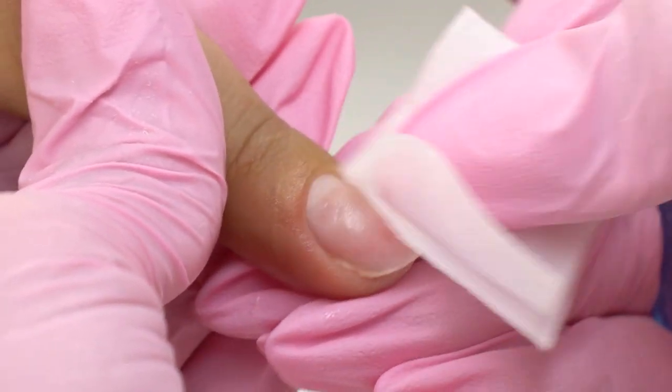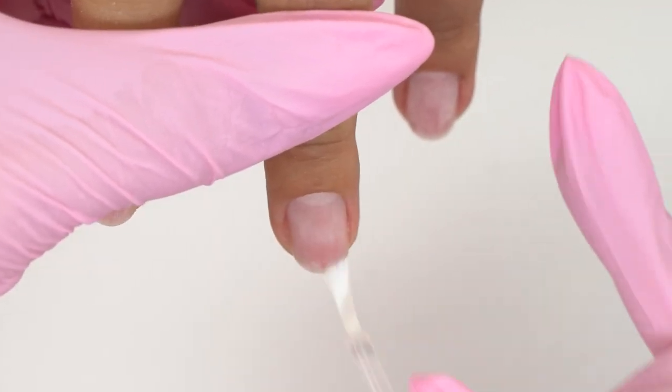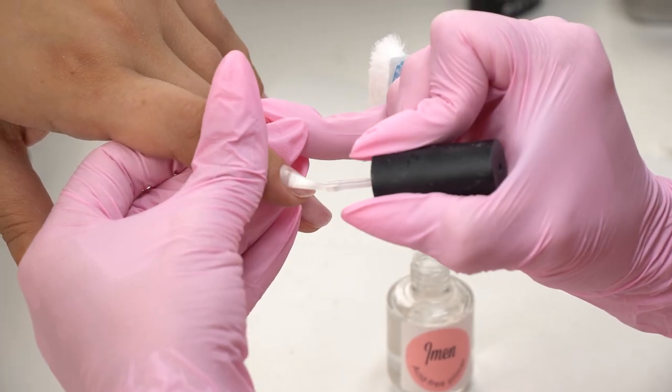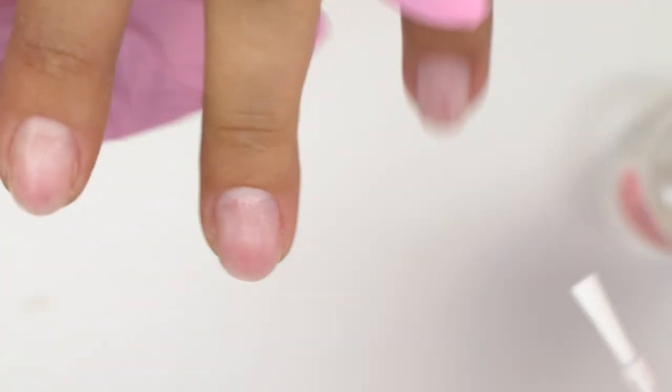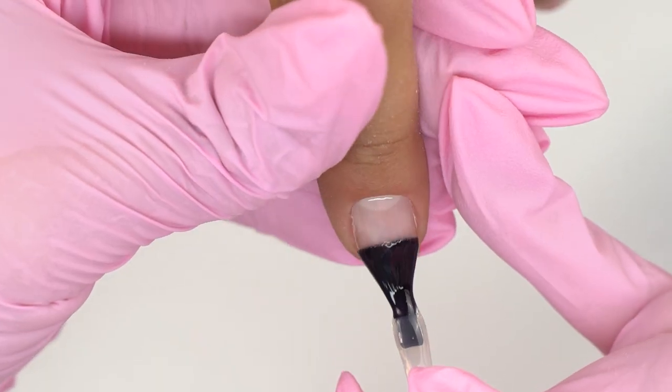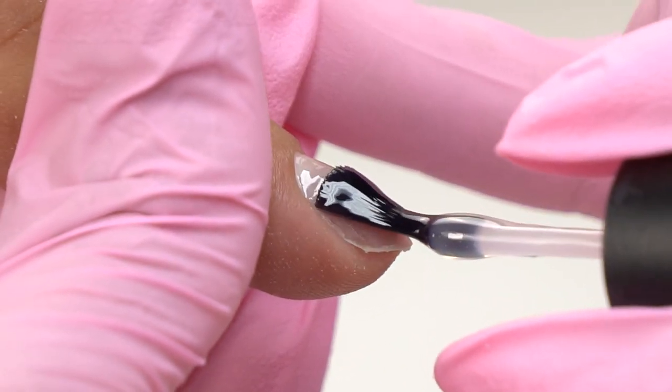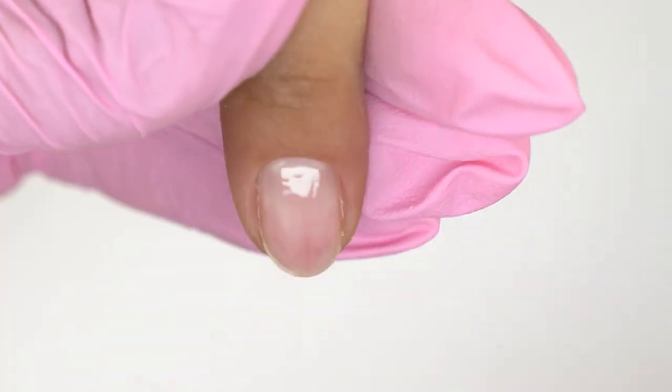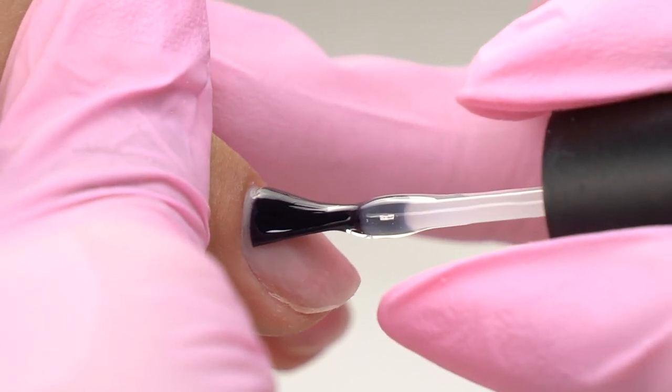Now I degrease the nail plate and apply a dehydrator to dry them out. And the next step is a clear base coat. We need to form a cushion between the nail and the tip. Just a medium layer will do, not too thin or thick as in the alignment.